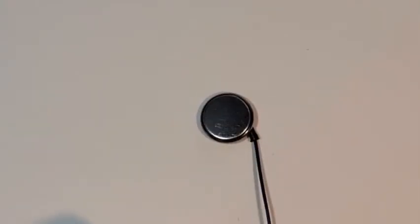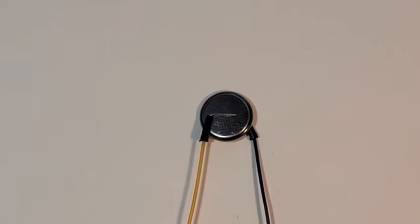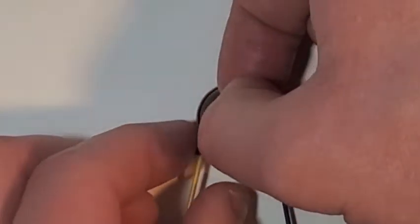Now flip your battery over and attach the other wire. Use the copper tape. Do not wrap the copper tape to the other side of the battery. Just like this.